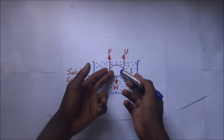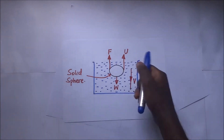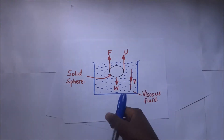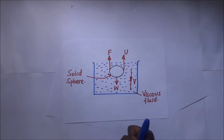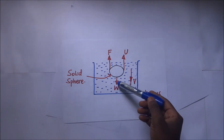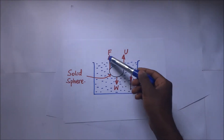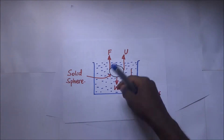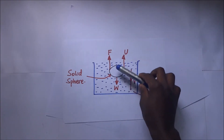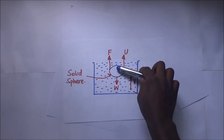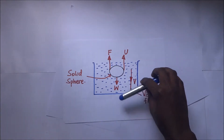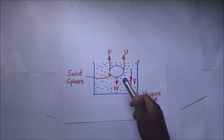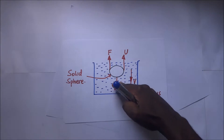Assume this sphere is falling through a very tall jar full of engine oil. At the beginning, the weight is bigger than the two upward forces combined — the downward forces are bigger than the upward forces. Because of this, there is an acceleration as the sphere drops down. But after some time, the downward forces become equal to the upward forces.